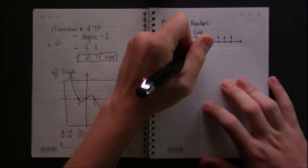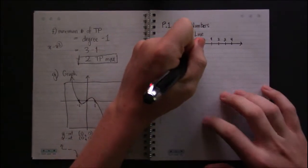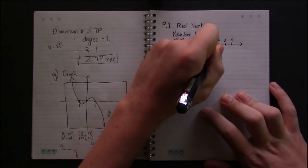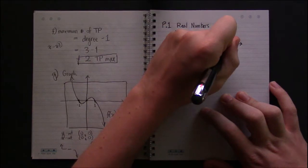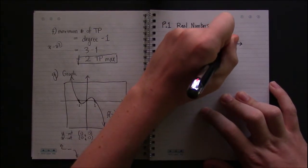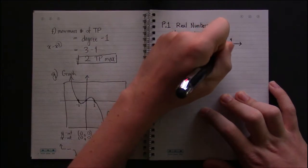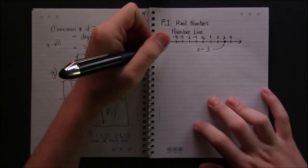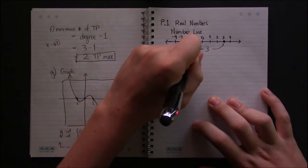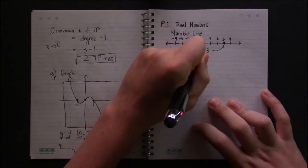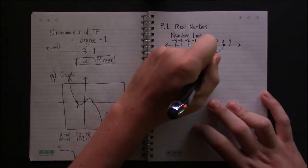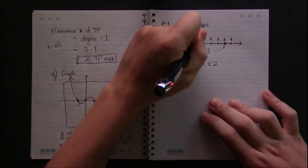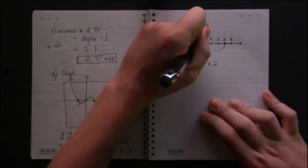Most of our answers to the questions in this textbook are going to be something of the form x equals 3, so they're going to be represented as a point on the number line. But some of our answers are going to be intervals or segments of the number line.